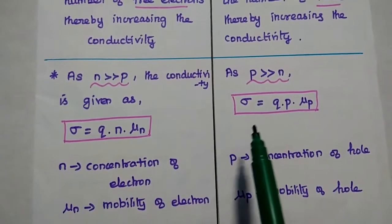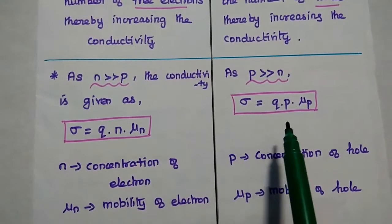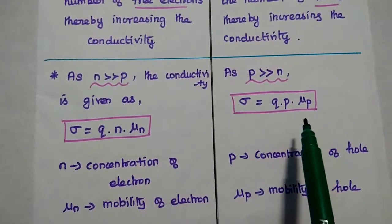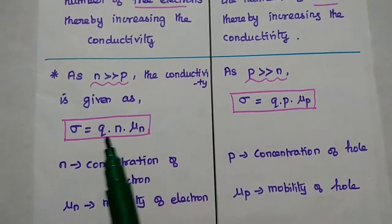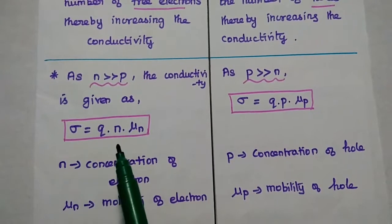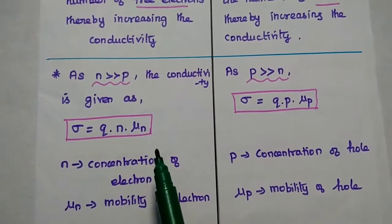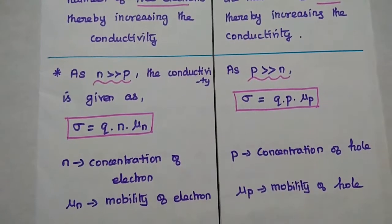That means, for P-type the conductivity depends on holes alone, while for N-type the conductivity depends on electrons and its mobility.